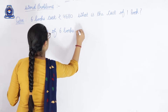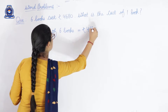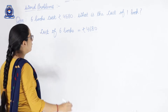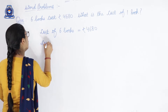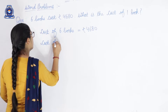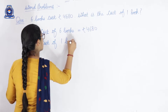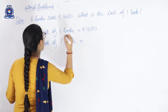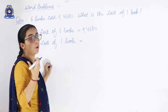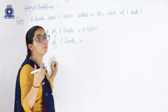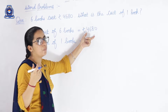...is rupees four thousand six hundred eighty. Then we have to find out the cost of one book. Think about it — when you go to a shop and you are told that six books cost rupees four thousand six hundred eighty...